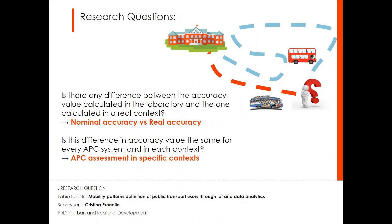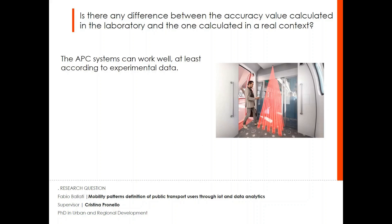My research activity is focusing on two main research questions. First, is there a difference between the accuracy value calculated in the laboratory and the one calculated in a real context? And second, is this difference in accuracy value the same for every APC system and in each context? For this question, we have to consider some functioning aspects of APC systems.